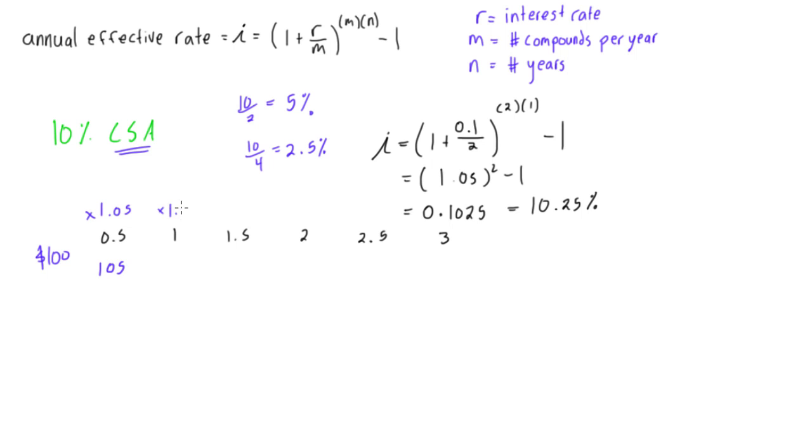105 times 1.05 is going to be $110.25. So all I've done here is I've just added on 5% of the 100, and then I've added on 5% of this 105. And you see that we've actually made a little bit more than 10% here. So we're going to continue this on. So we'll just keep multiplying by 1.05, which adds 5% on to this total.